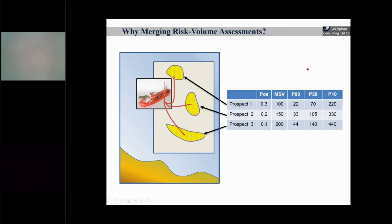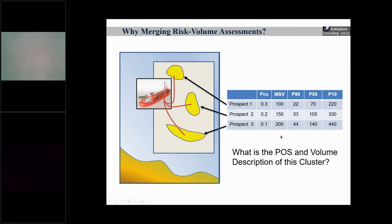Another example uses the same method but in a different context: three prospects in an offshore situation planned for development with an FPSO. Each prospect has its own risk and volume description. The big question is what is the probability of success and volume description of this cluster, because we need that to do a proper economic analysis for the exploration decision. So how do you go about calculating merged volumes?